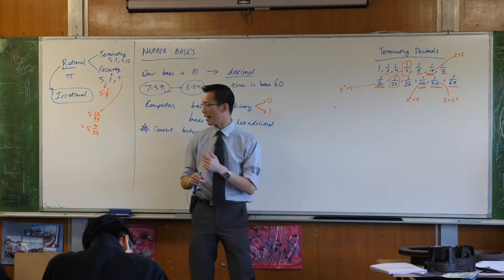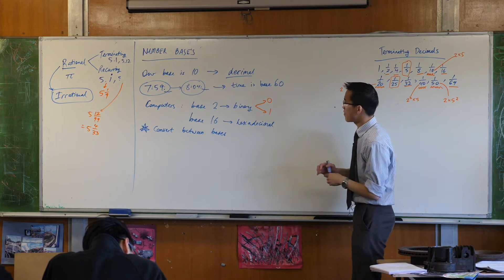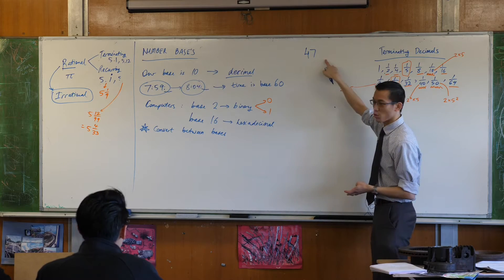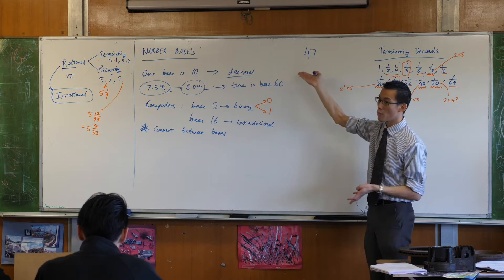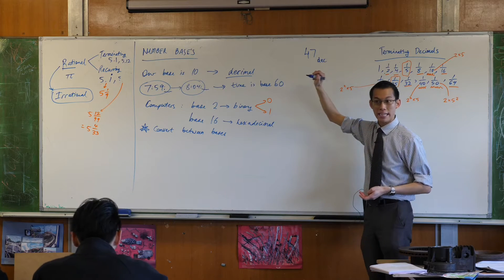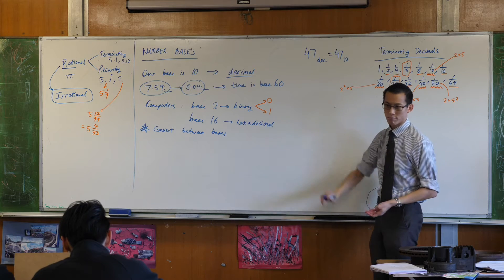So to indicate that a number is in a base, what you do is you write that number like say 47 and you write its base as a little subscript afterwards. So if I'm writing this as decimal you could either write it as 47 with a dec which means decimal or you could write it as 47 with a little 10 which means base 10.